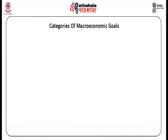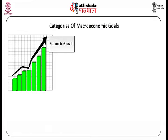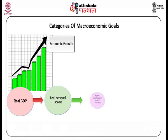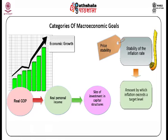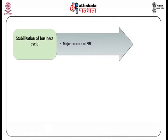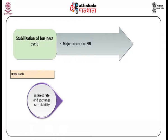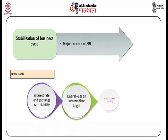Let us now have a look at different categories of macroeconomic goals. First, economic growth, measured as the growth rate of real GDP, real personal income, or the size of investment in capital structures and equipment. Second, price stability, measured by the stability of the inflation rate and by the amount by which inflation exceeds the target level. Third, stabilization of business cycles — a major concern of RBI — with policy actions aimed at counteracting business cycle influences called counter-cyclical policy. Fourth, a set of all other goals including interest rate and exchange rate stability, which may also be goals in themselves considering financial sector stability.